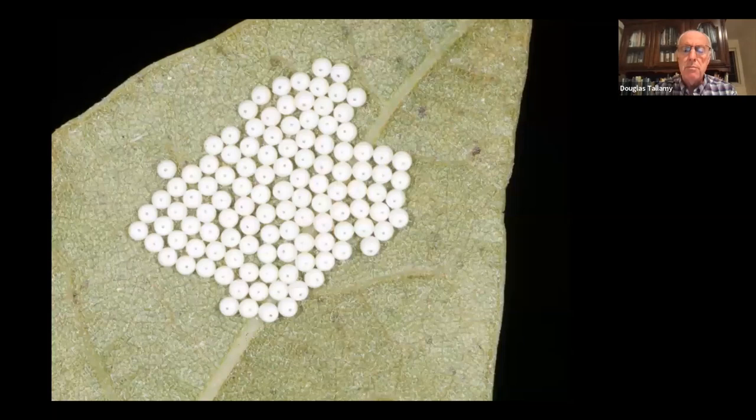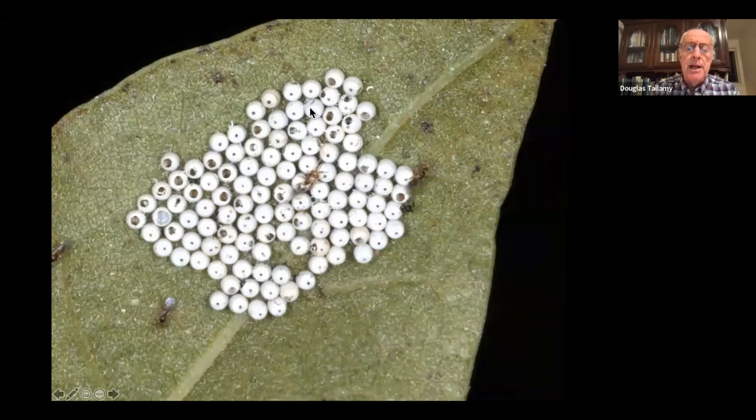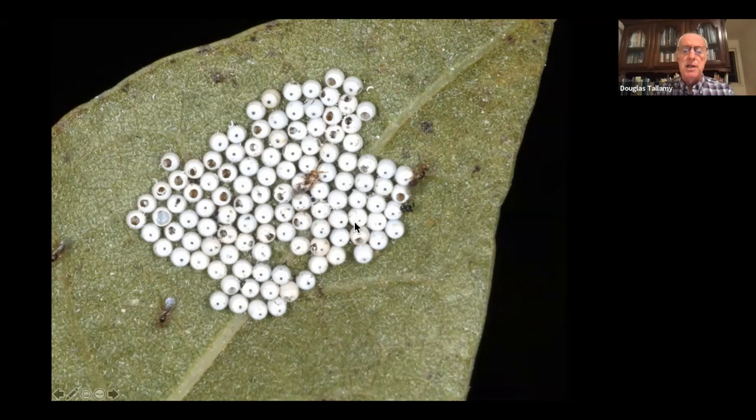These are eggs of the yellow-neck caterpillar — a dangerous time to be an egg. Minutes after they were laid, a tiny parasitic wasp came and started laying eggs inside them. Here the adult wasps are emerging, having eaten a good portion of that egg mass. This is what keeps caterpillar numbers down. When you grab the spray can, the first thing you kill are all these natural enemies — which actually increases the caterpillar population.